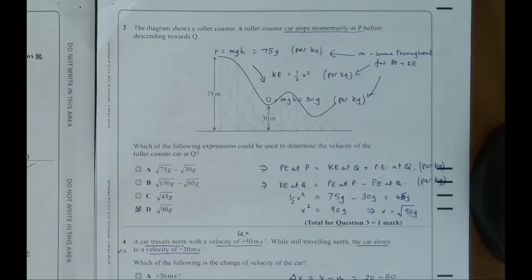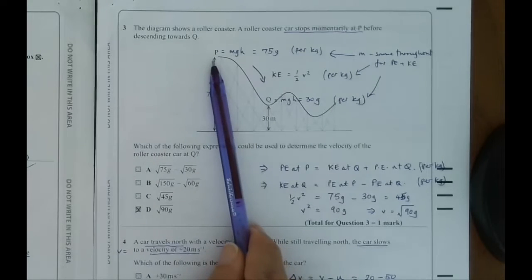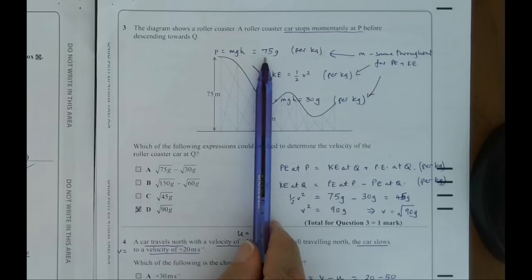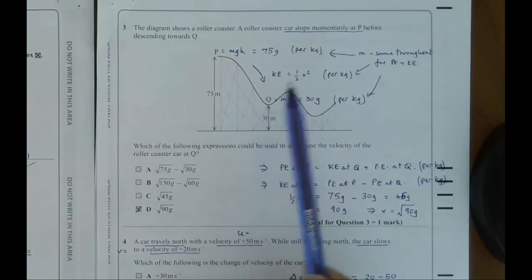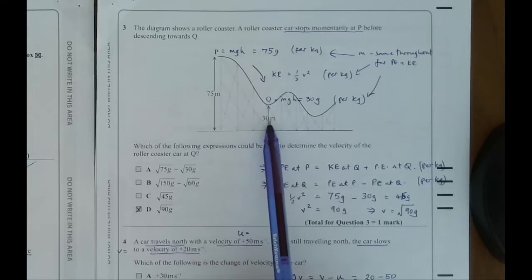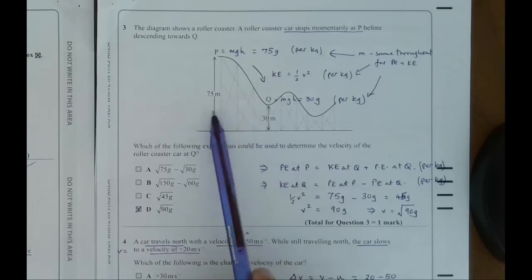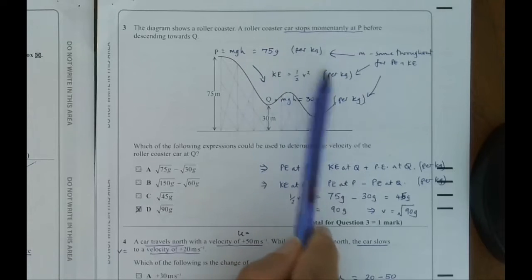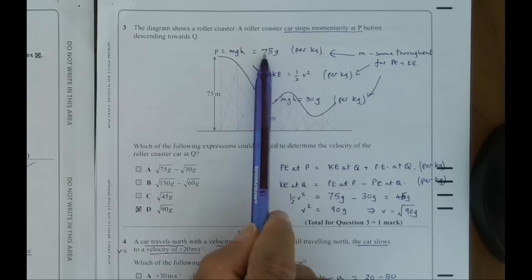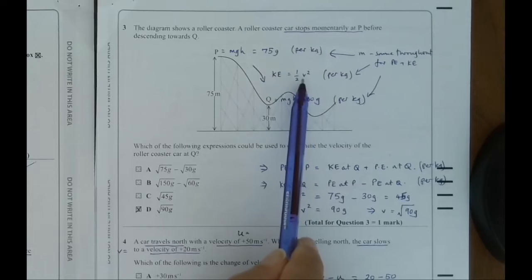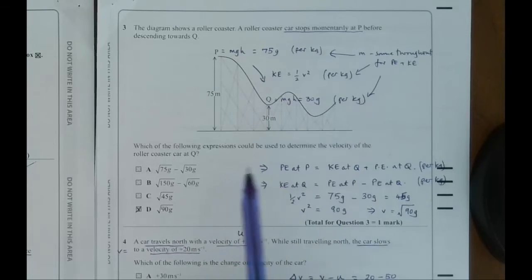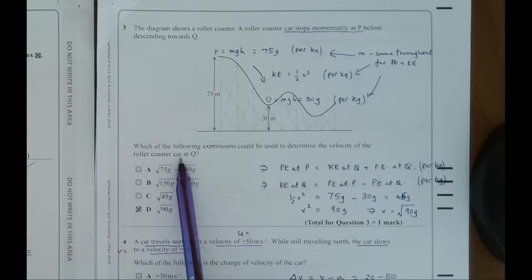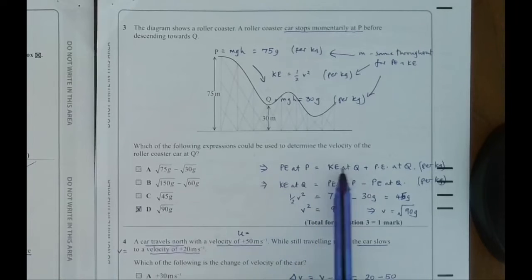Question three. It's a roller coaster. So this is about energy conversion. The roller coaster car stops momentarily at the top of the slope P, where it has MGH, 75 is the height. Mass is per kilogram. We can ignore the mass because it's still got the same mass when it goes down. And then it wants you to momentarily at P before descending down to Q, which is 30 metres. So 45 metres of the height difference is converted to kinetic energy.